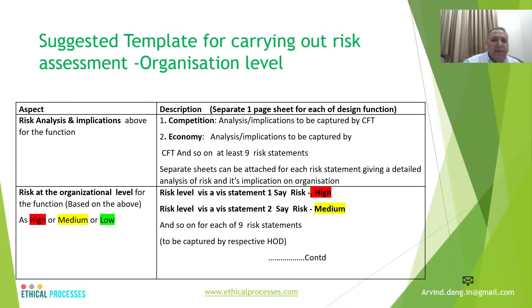Once these risk statements have been prepared, the design HODs need to prepare in consultation with the cross-functional team a detailed analysis of each aspect — such as a SWOT analysis with respect to competition, economy, and so forth. For each of these nine risk statement aspects, there could be two to four pages per risk statement because very aggressive analysis needs to be carried out to understand the entire situation and how it is going to affect the business.